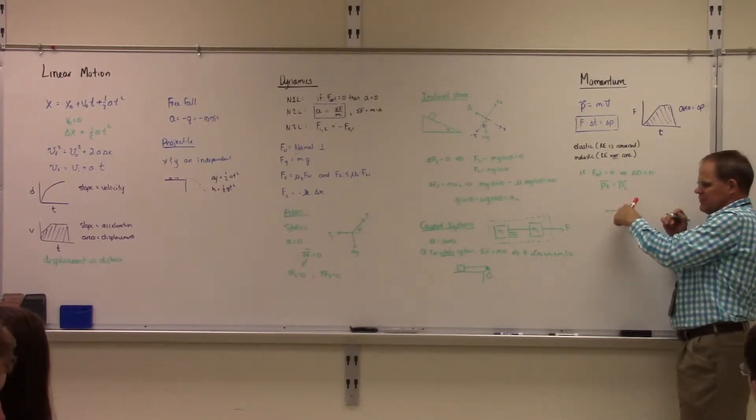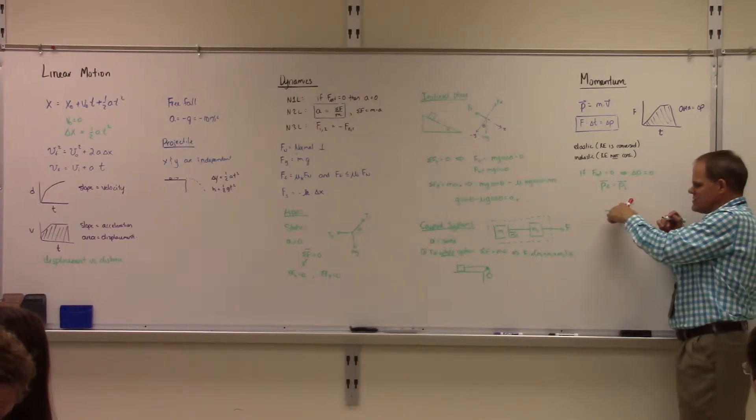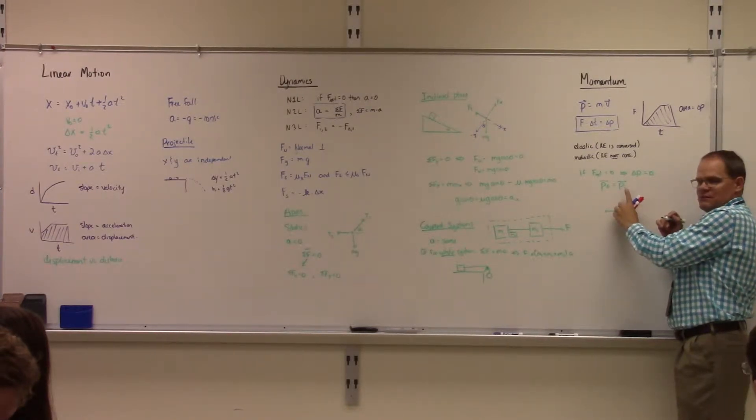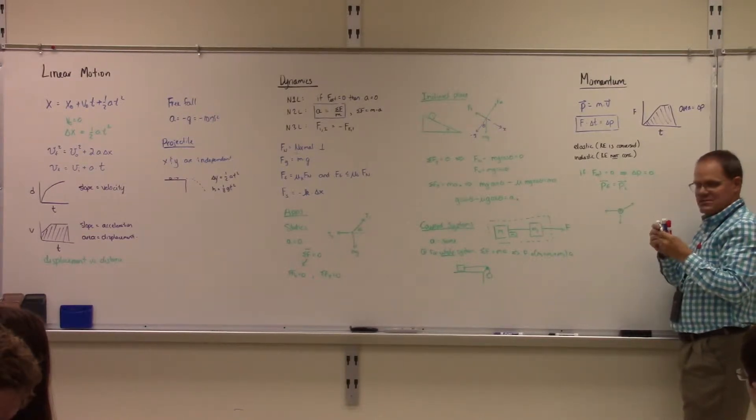Likewise, if this has momentum, before the collision momentum is zero, so if this has negative momentum, there must be a fragment going, some component of its velocity must be upwards, right? To balance out.